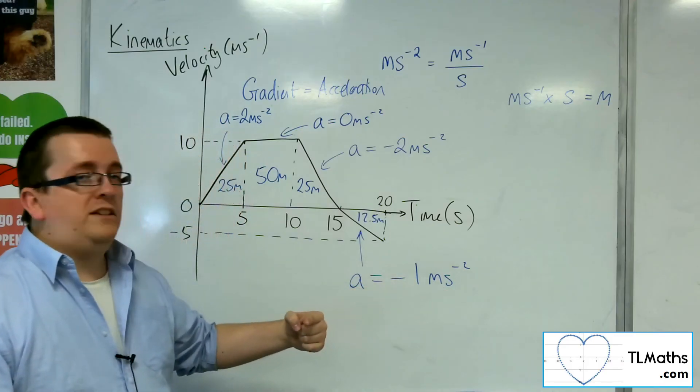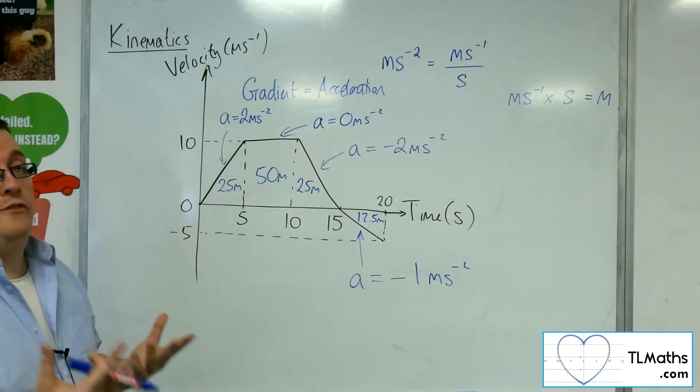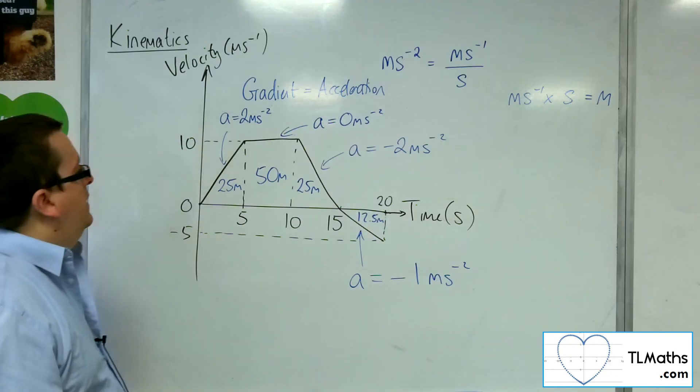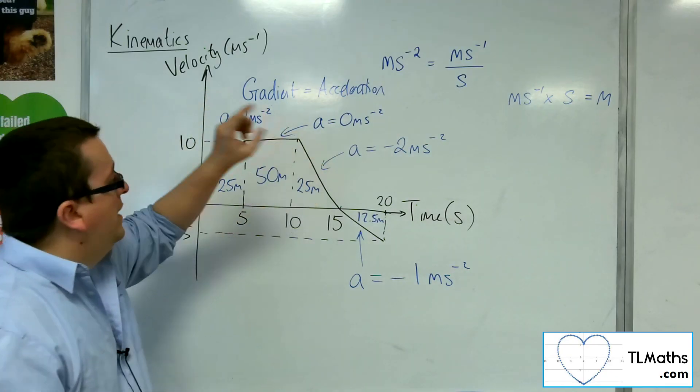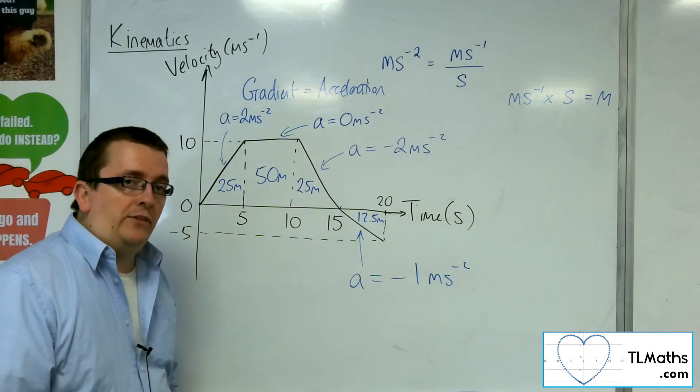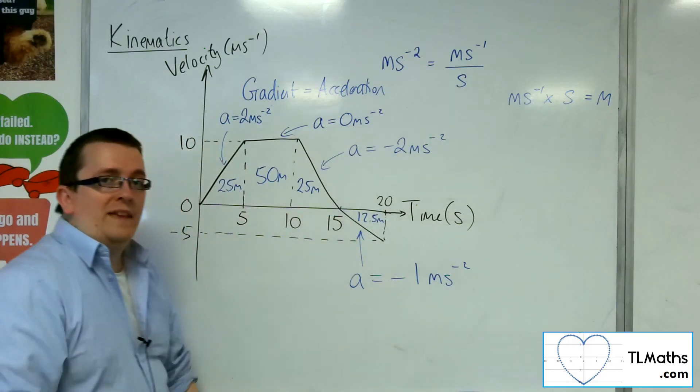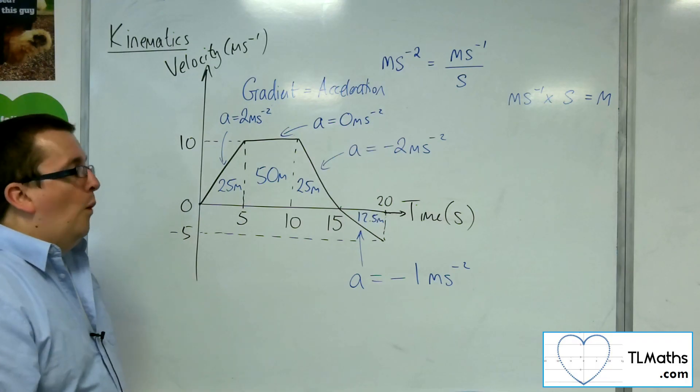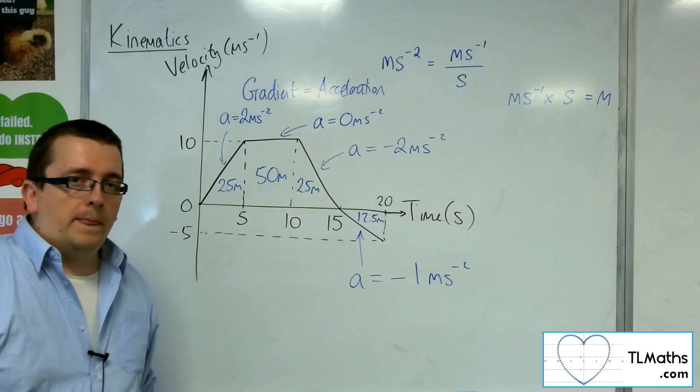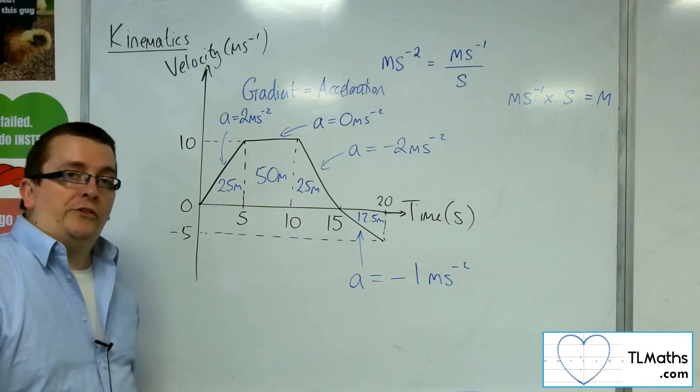So the total distance that I covered was 112.5 metres. The total displacement, however, is 25 plus 50 plus 25, take away 12.5, so 87.5 metres. That's how far I am at the end of the travel, at the end of that 20 seconds, away from my starting position, which I was considering as the origin. So that's how the distance and displacement can be read off differently from a velocity time graph.